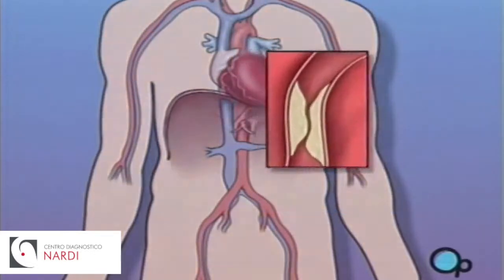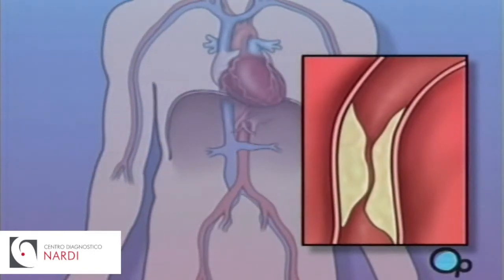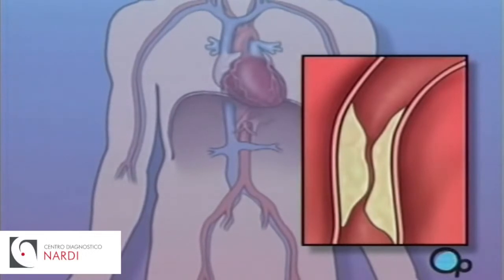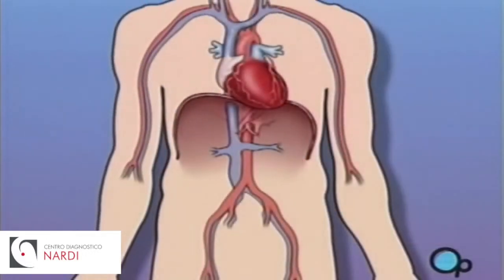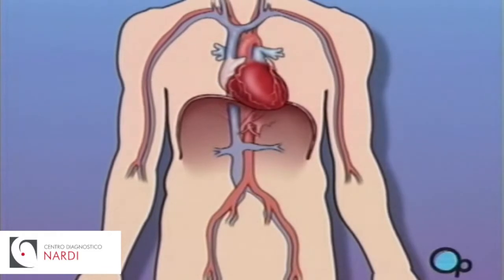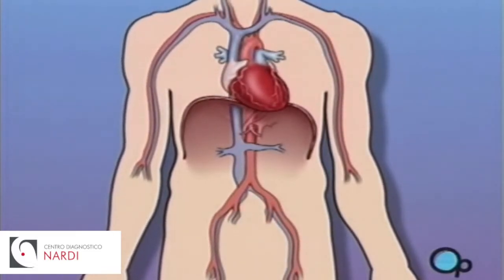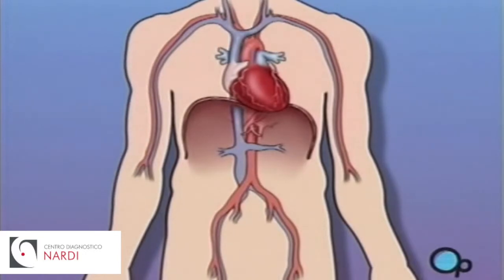Sometimes these blood vessels can narrow or become blocked by plaque deposits, restricting normal blood flow. In simple terms, a balloon angioplasty with stent insertion is a procedure used to increase the amount of blood flowing through the coronary artery.